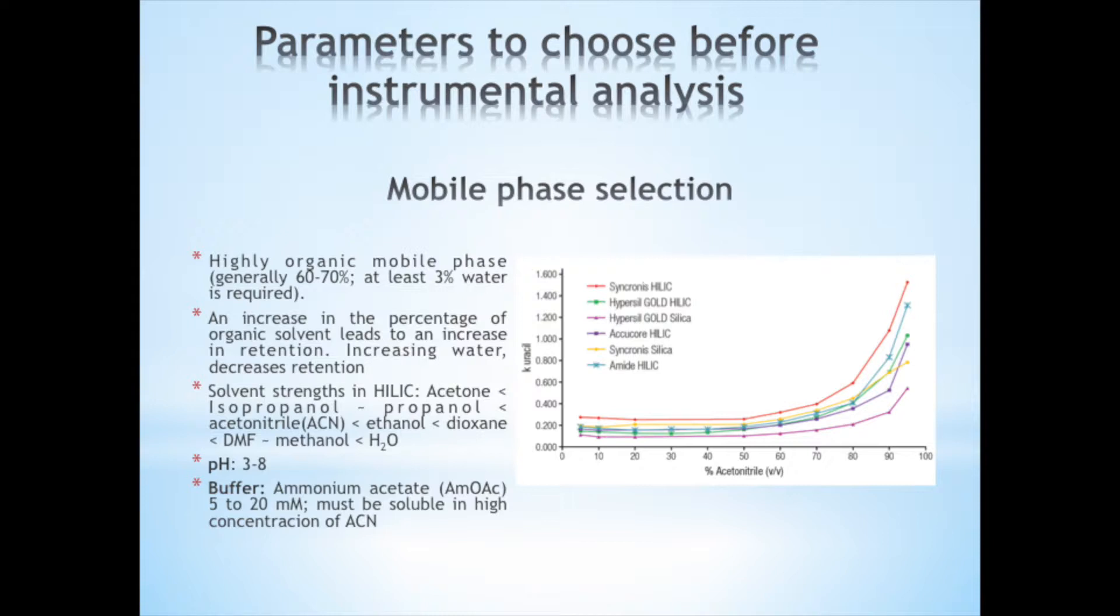Solvent strength goes from acetone being the least to water being the strongest. On the graph to the right is a comparison of different mobile phases of some columns while the concentration of acetonitrile is increased. We can observe how, as we increase the concentration of organic solvent in the column, the retention time increases.